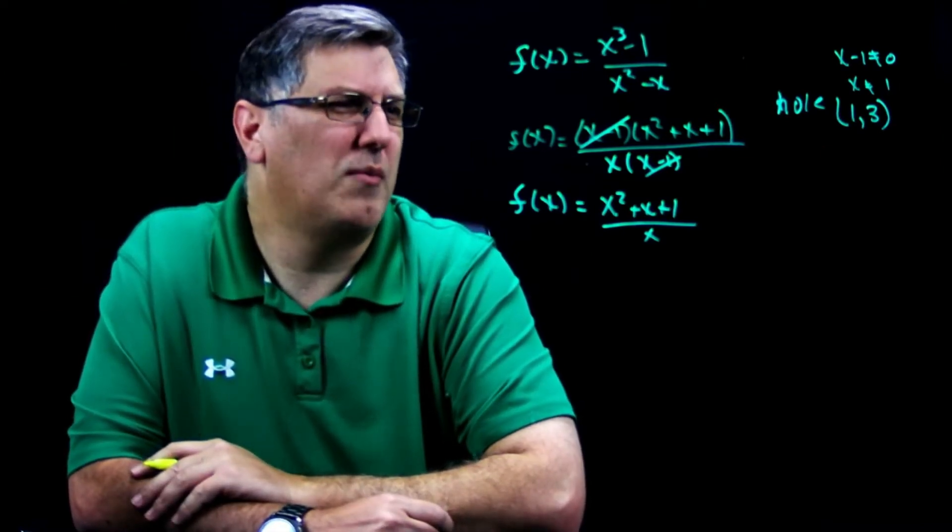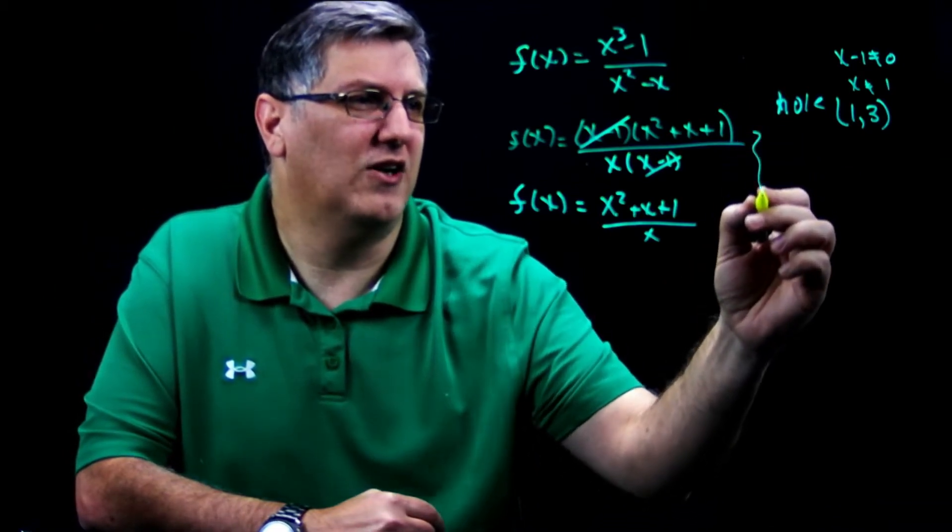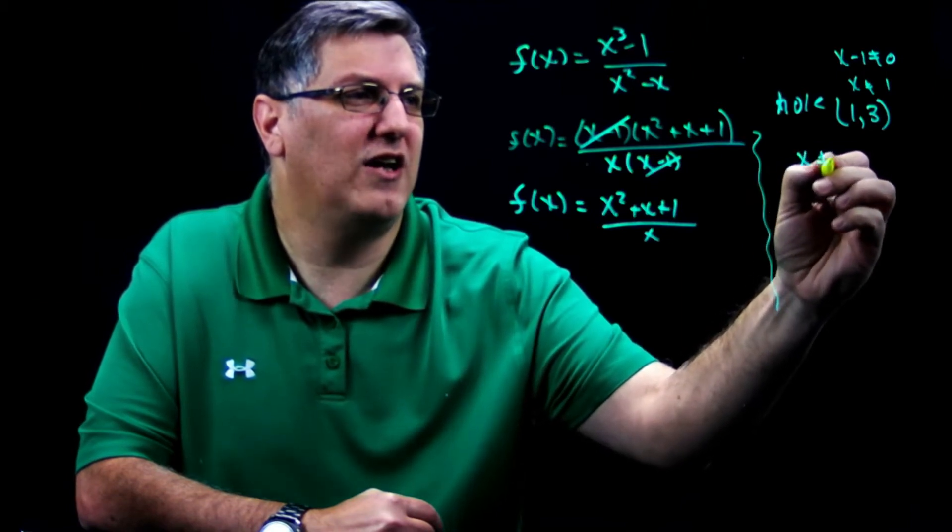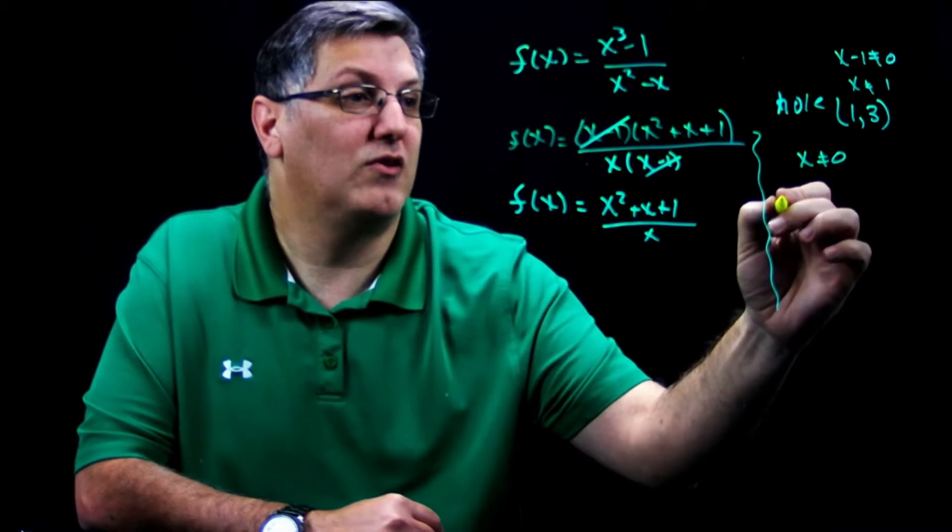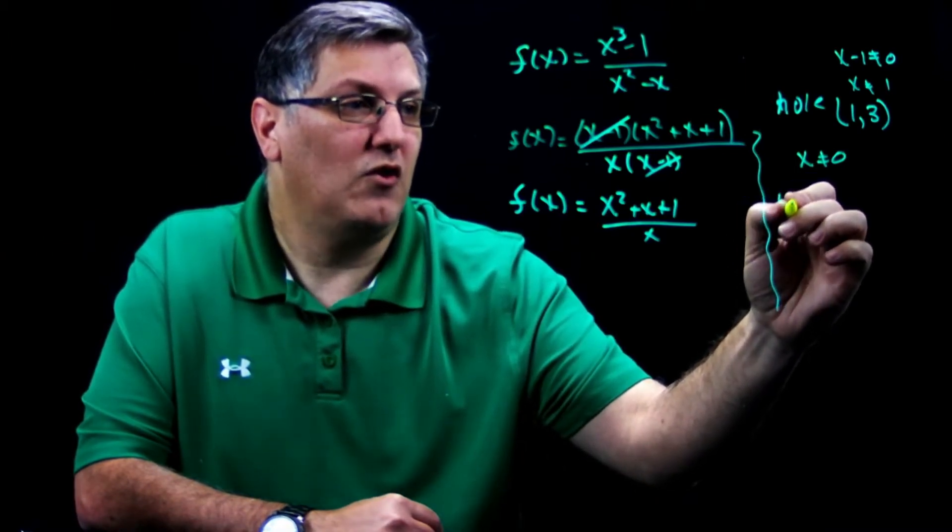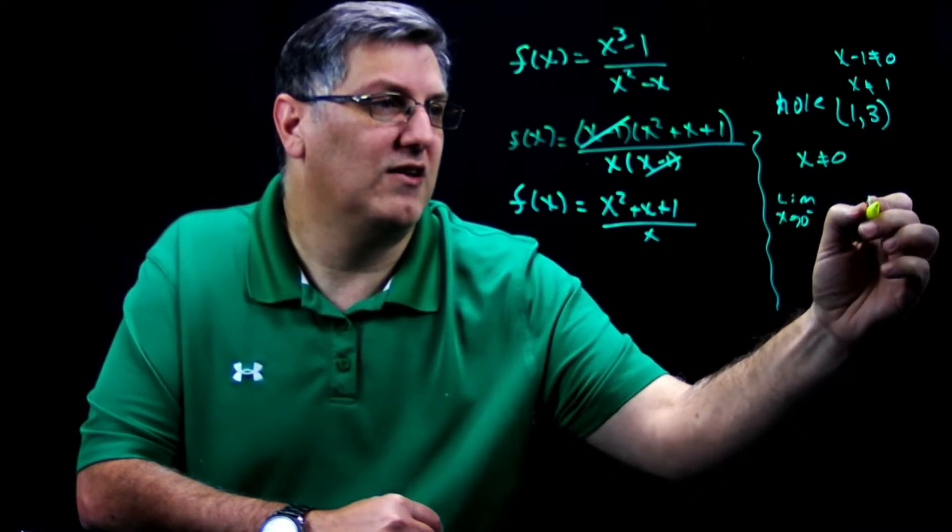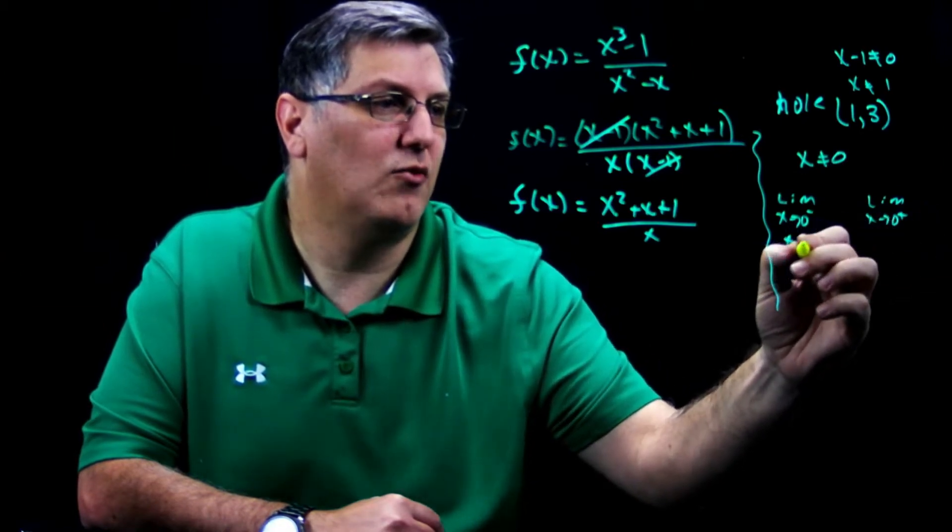So what about my vertical asymptote? Well, let's just kind of do this on the side over here. Vertical asymptote. So I know x cannot equal zero because that's the only thing that's left, right? So let's figure out what's going on. So we're going to do the limit as x approaches zero from the left, limit as x approaches zero from the right. Let's do our tables.